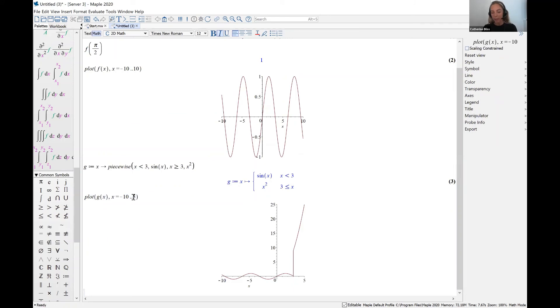That looks a bit better, but we still notice something very strange here, and that Maple has tried to connect the endpoint of the sine curve to the start of this parabola. We don't want to do that. We know that this is a discontinuous graph, and to plot this properly, we have to set discont equal to true.